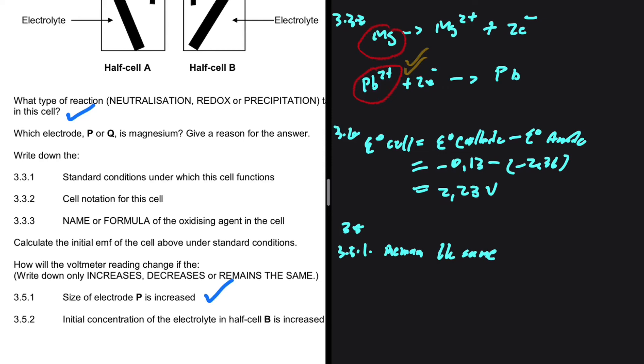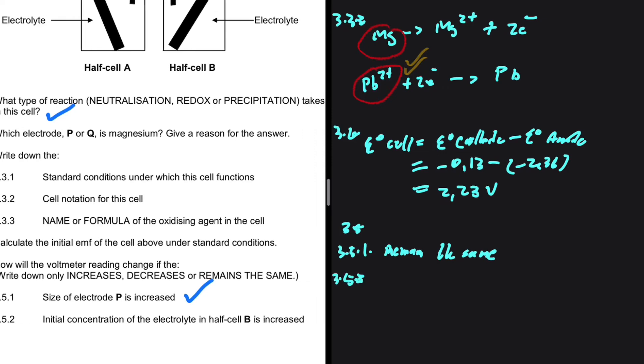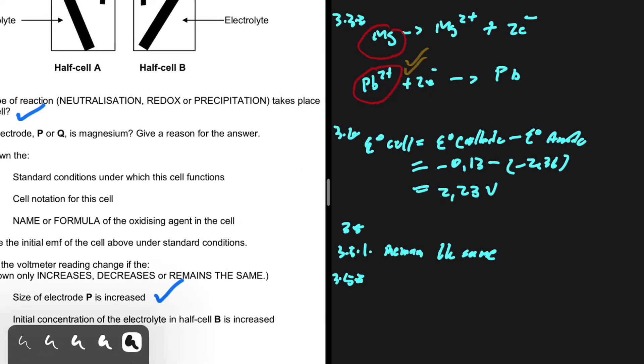And now let's take a look at 3.5.2. If the initial concentration of the electrolyte in half cell B is increased.